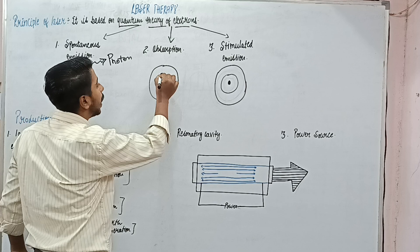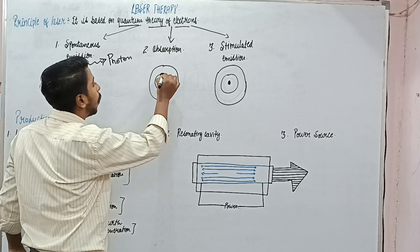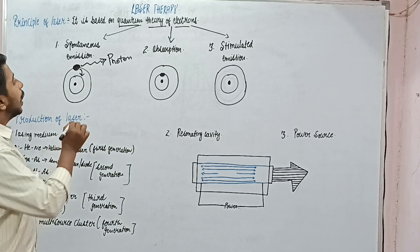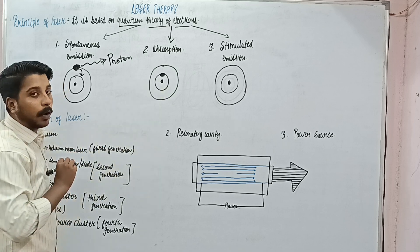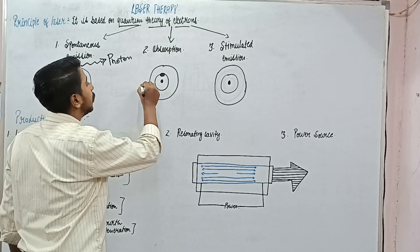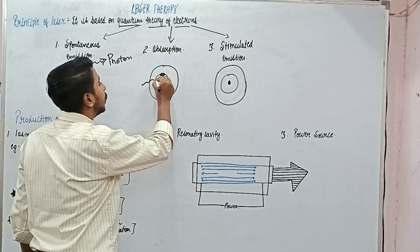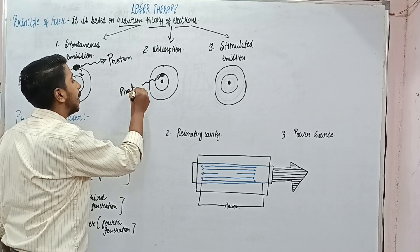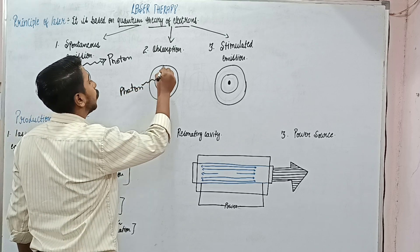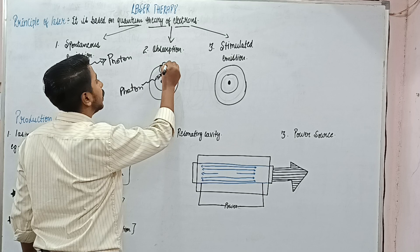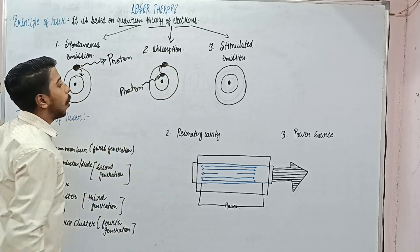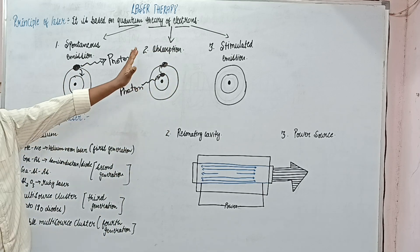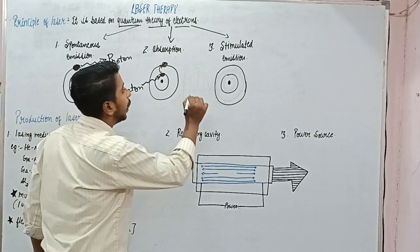Now, if an electron is present at a lower energy level and one photon comes and gives energy to it, that photon stimulates the electron to go to the higher energy level. This process is called absorption.